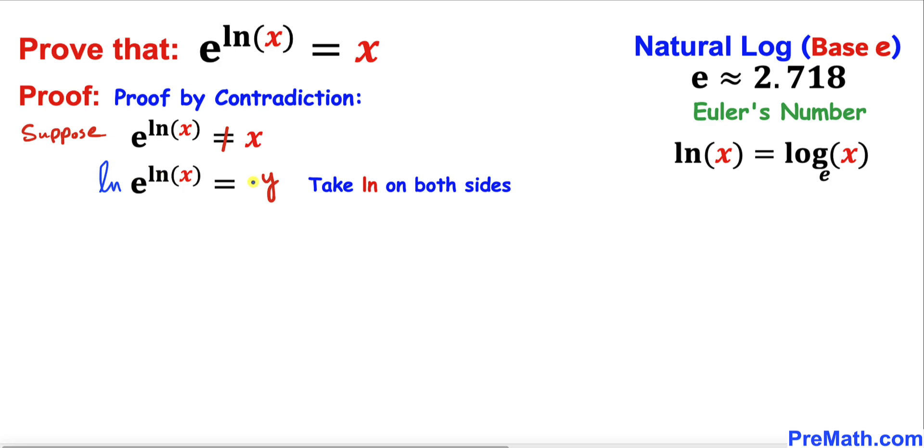Now let's recall the power rule. According to this rule, this exponent natural log of x we can move all the way to the front. So therefore, the left-hand side could be written as natural log of x times natural log of e.